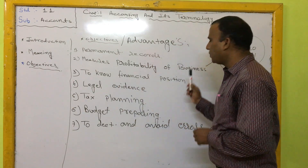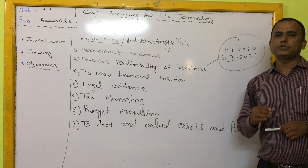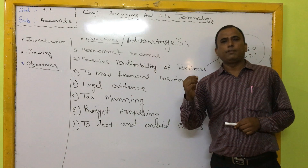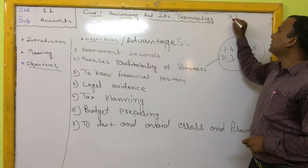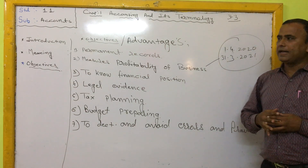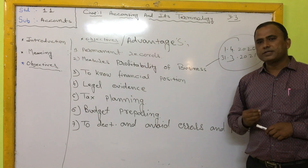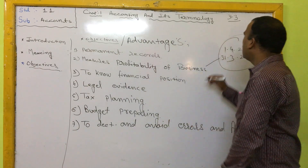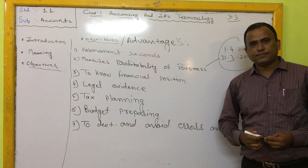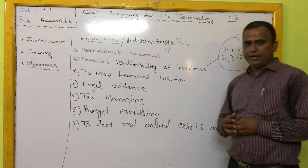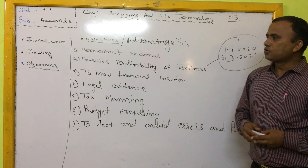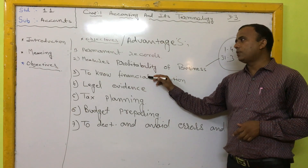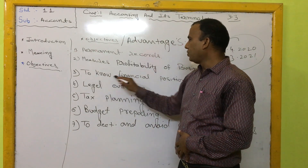The third objective is to know the financial position of the business. When we prepare the accounting book, we prepare the balance sheet at the last day of the financial year — 31st March. The balance sheet is divided into two parts: one part records all assets and the other records all liabilities. If liabilities are more than assets, the financial position is not good; if assets are more than liabilities, the financial position is good.